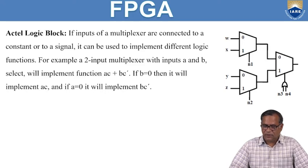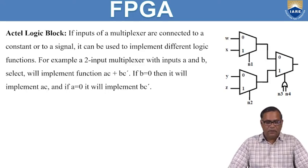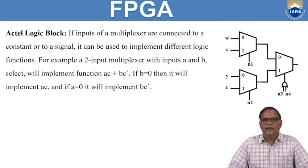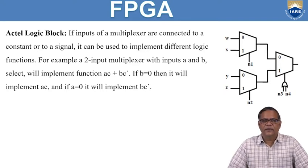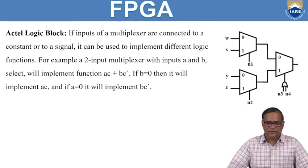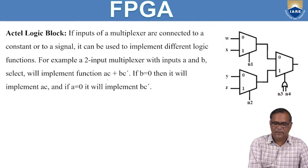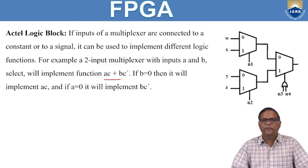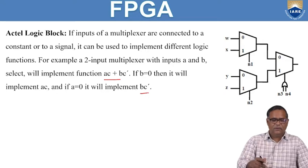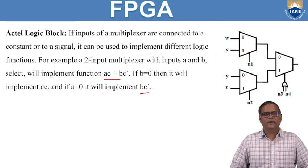The Actel logic block is based on multiplexer logic. If inputs to the multiplexer are connected to a constant or a signal, it can be used to implement different Boolean functions. For example, in a two-input multiplexer with inputs A and B, the select line implements the function AC + BC̄. If B equals 0, it implements AC, and if A equals 0, it implements BC̄. This sort of logic implementation is done in the Actel logic block.